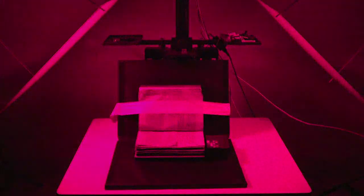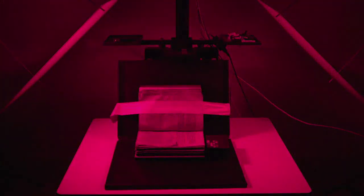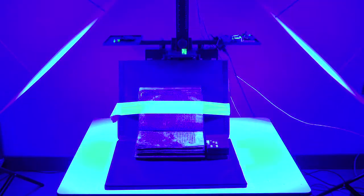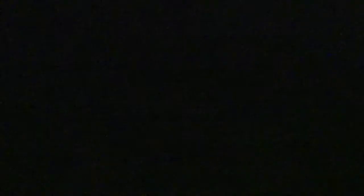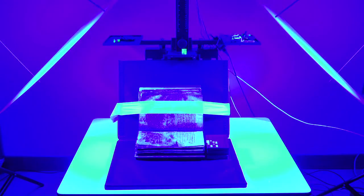Multispectral imaging helps us to read palimpsests by using a range of different lights in order to enhance any of the different chemical compositions in the manuscript itself. So differences between ink and parchment become quite apparent under different lighting conditions.